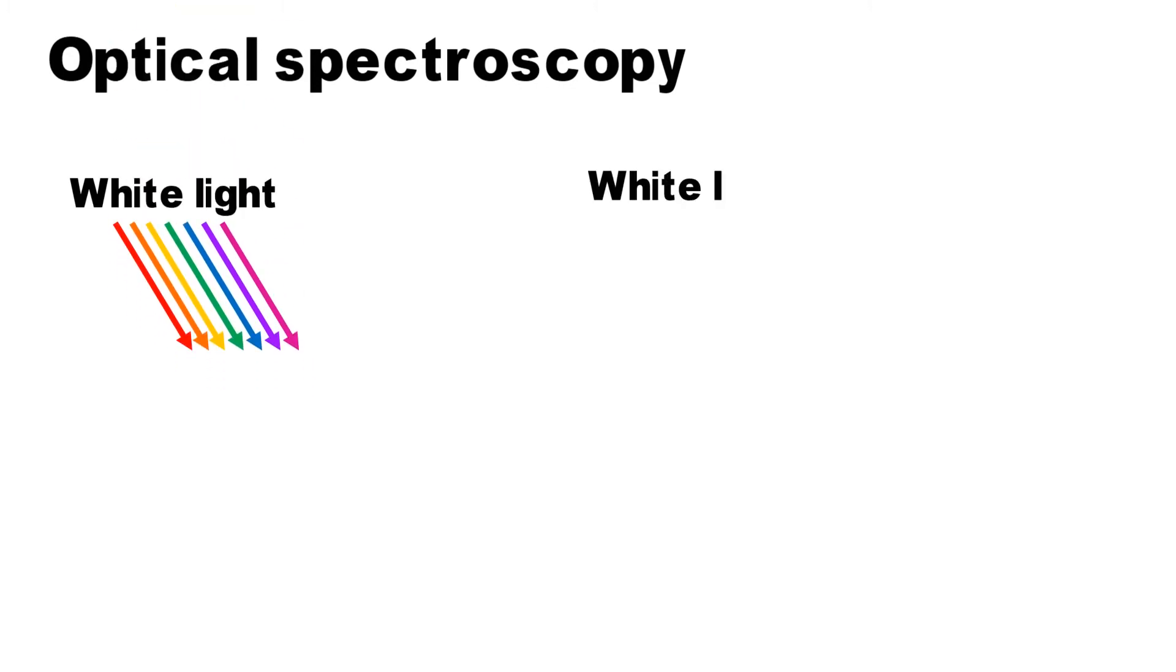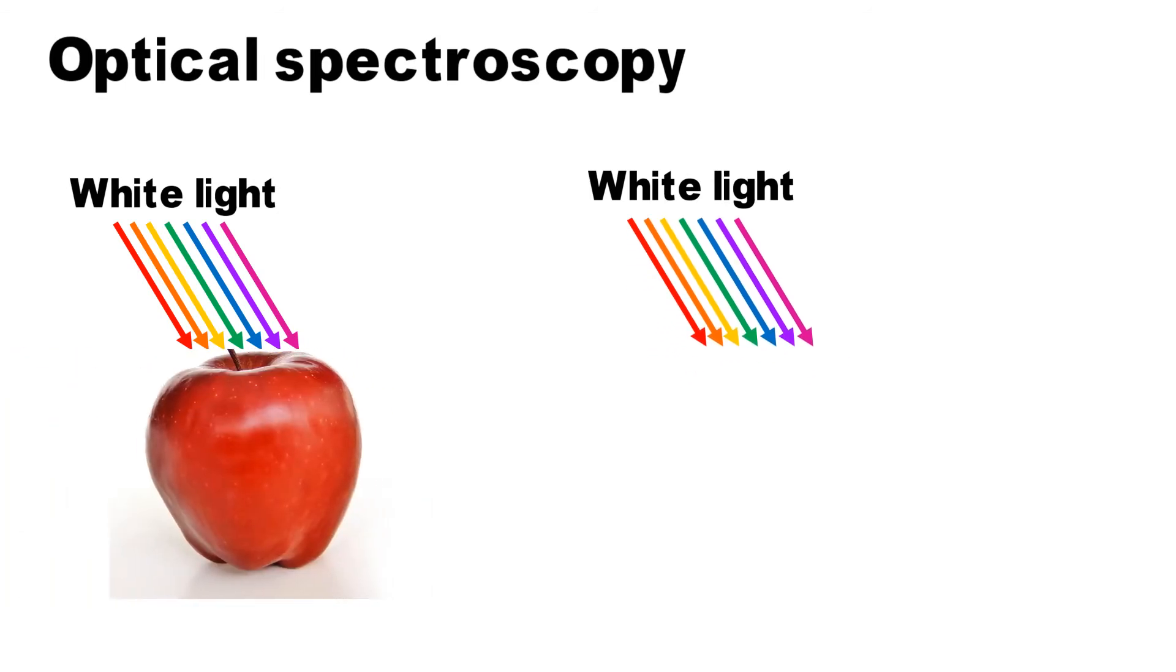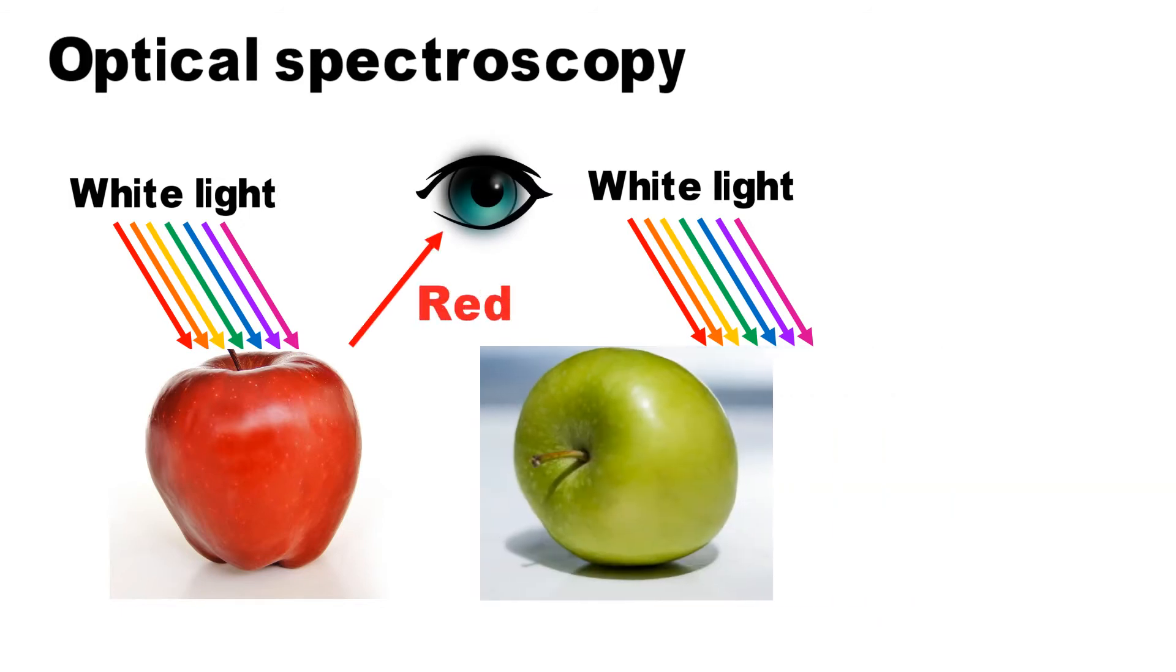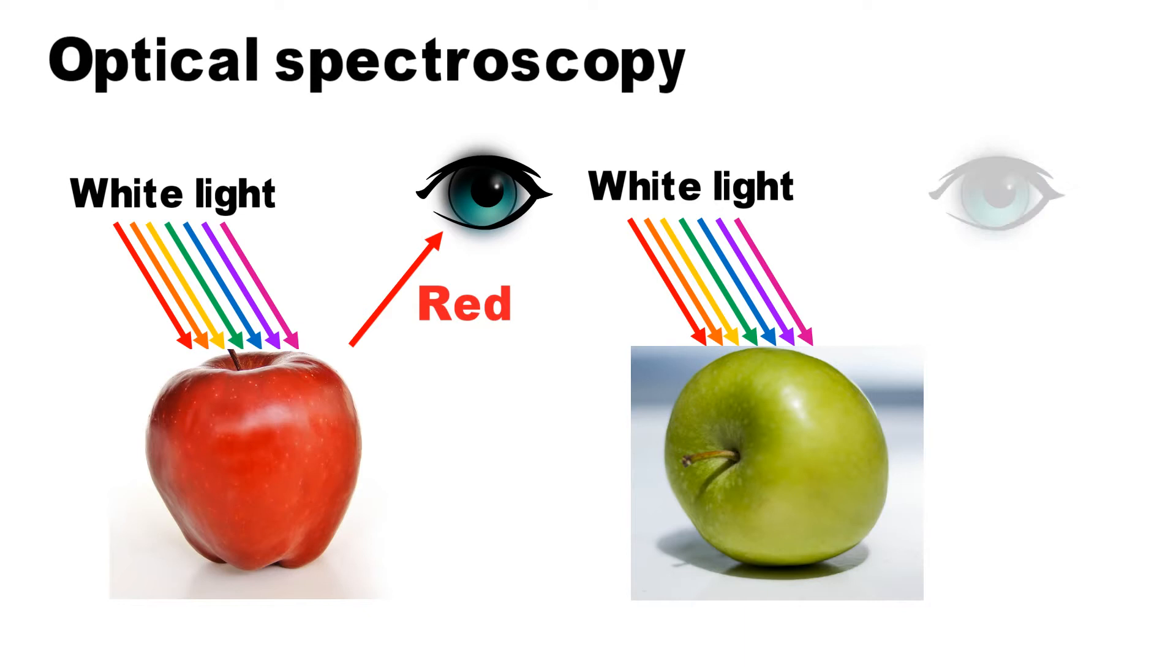Optical spectroscopy is based on the interaction of light with substance. If light is shining onto an object, it will be absorbed by the object. For example, red light is reflected by a red apple, whereas green light is reflected by a green apple. All other colors are absorbed.